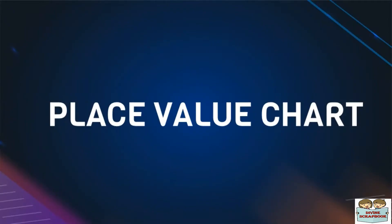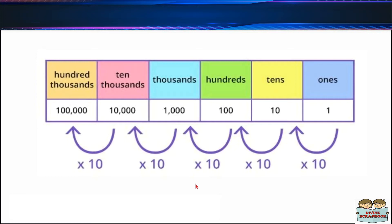If you look at this picture, each place to the left is 10 times greater than the place to its right. That means, as we move from the right to the left, the place value increases 10 times with each place. So the places are: ones place, tens place, hundreds place, thousands place, ten-thousands place, and so on.